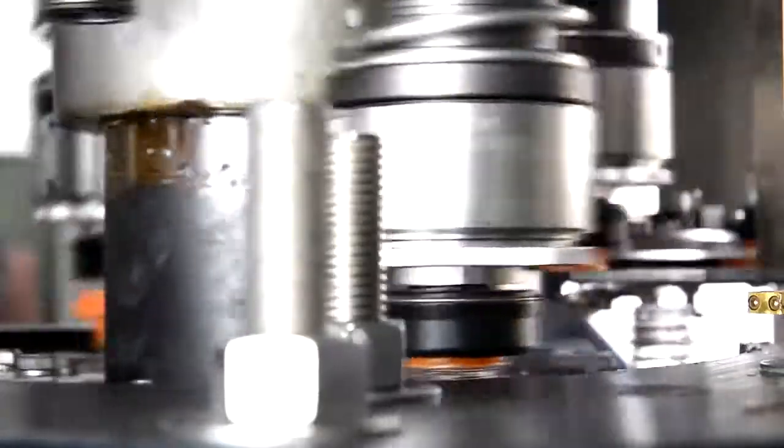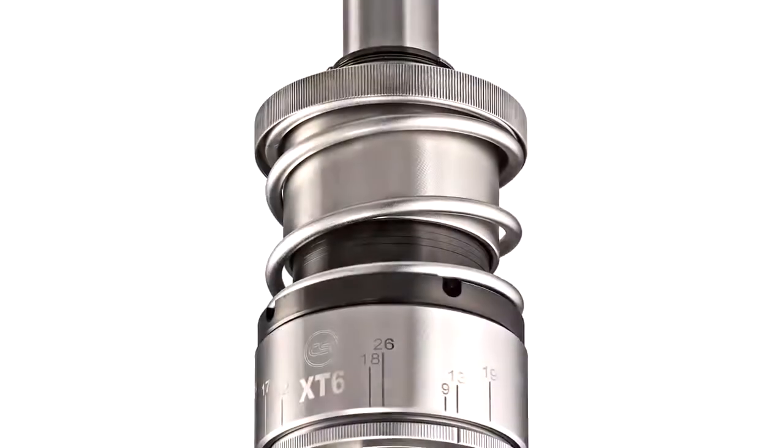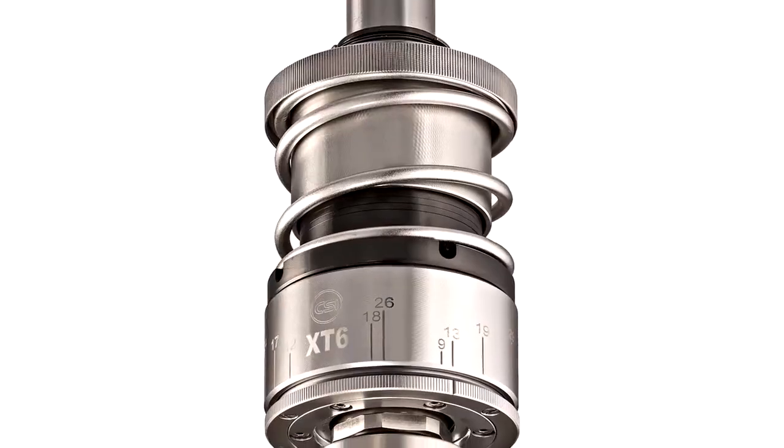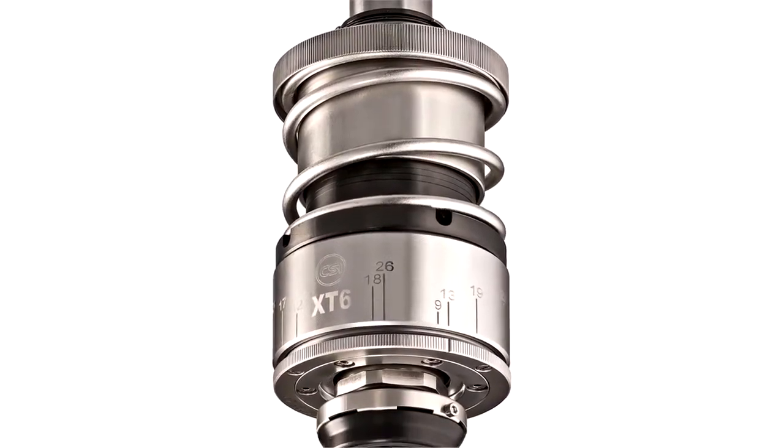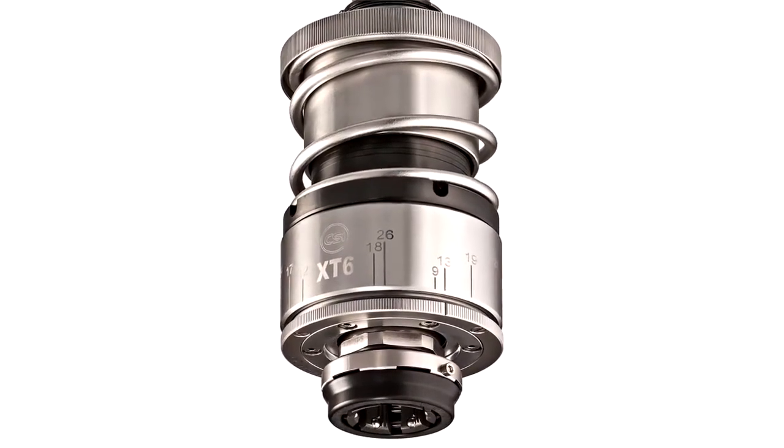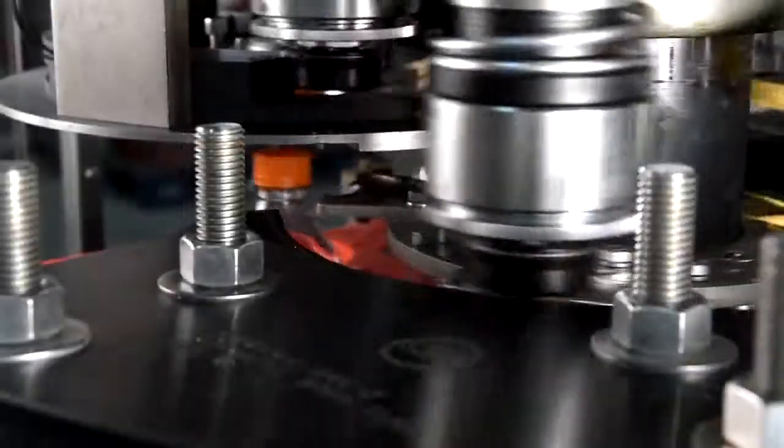As soon as the bottle is secure in the capping turret, the capping chuck and bottle cap descend onto the bottle and begin applying. A spring in the capping headset provides some downward force to keep the cap engaged in the chuck and to press the anti-rotation knives into the ledge on the bottle finish.